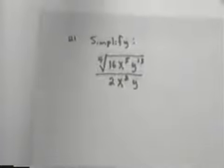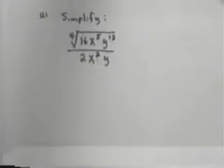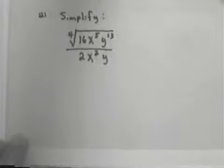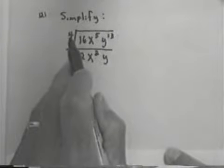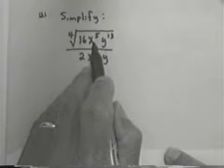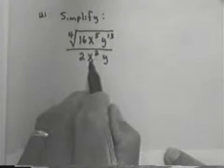Division works the same way. You just go ahead and simplify the radical and then take it from there. So if I have the 4th root of 16x to the 5th divided by 2x squared, y,